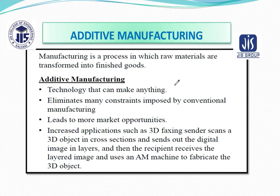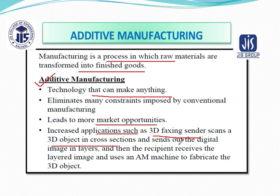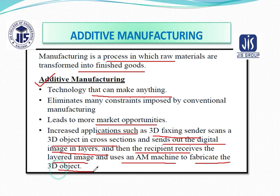Additive manufacturing is a process in which raw materials are transformed into finished goods. These are the properties that additive manufacturing basically holds: one is technology that can make anything; elements may constrain imposed by conventional manufacturing; next it leads to more market opportunities; and increased applications such as 3D faxing — where you scan a 3D object in cross section, send the digital images in layers, and the receiver uses additive manufacturing machines to fabricate the 3D object.